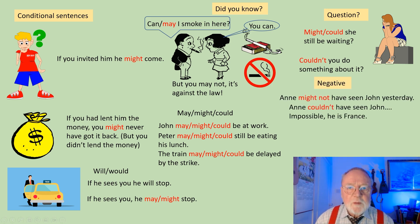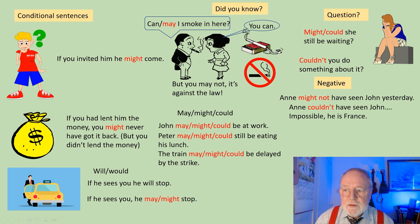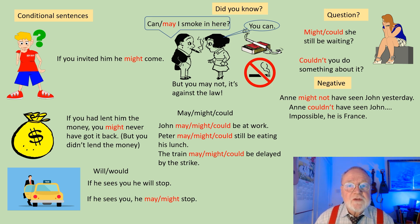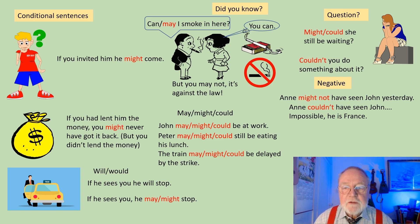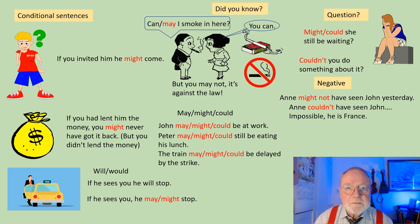The negative forms do have slightly different meanings. Anne might not have seen John yesterday — that's a kind of speculation. Did she see him? Didn't she see him? We don't really know. But if we say Anne couldn't have seen John, we're expressing an impossibility. She couldn't have seen him because he is in France.